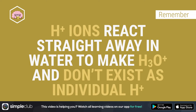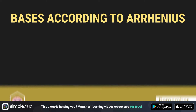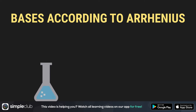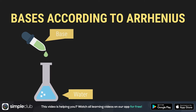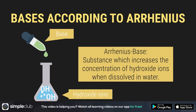Arrhenius hasn't given us a definition for bases yet. According to Arrhenius, if you add a base into a solution with water drop-by-drop, OH-minus particles will form in the water — the so-called hydroxide ions. A substance is an Arrhenius base if it increases the concentration of hydroxide ions when dissolved in water.